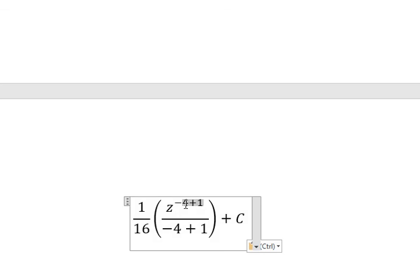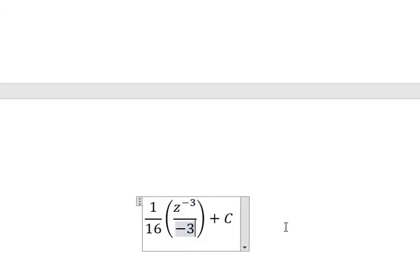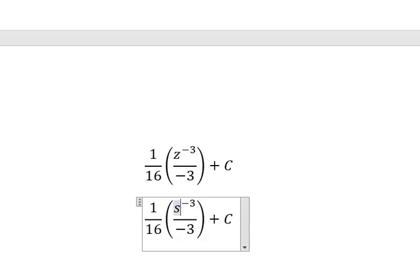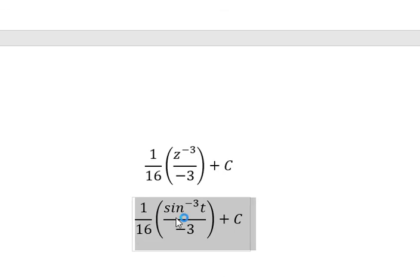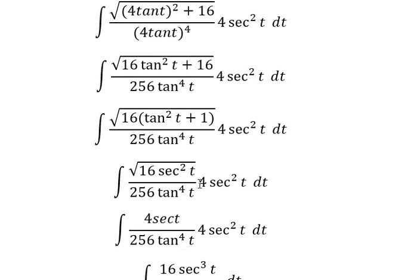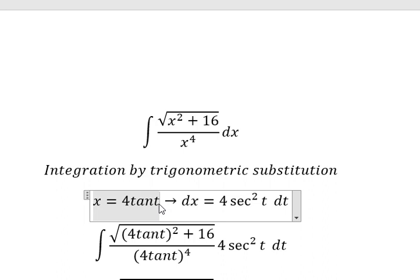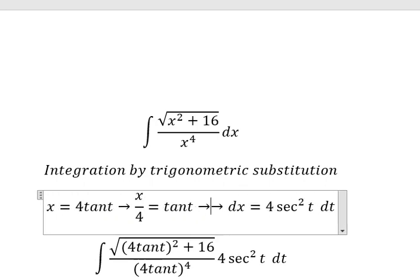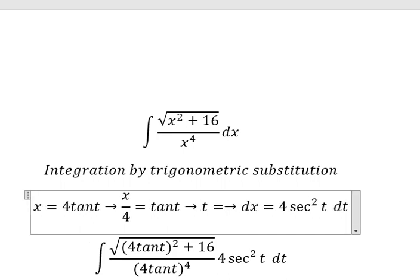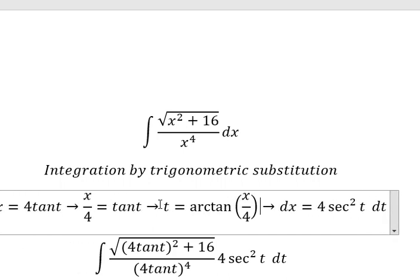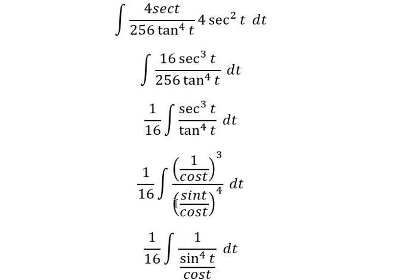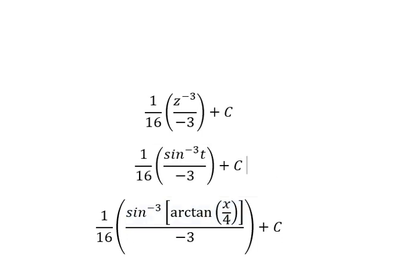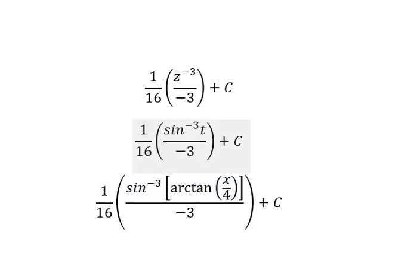This gives us a power of negative 3. For z, that is sin(t). For t, we need to divide both sides by 4 to find the value of t, which is arctan(x over 4). Substituting back in gives us the final answer. This is the end. Thank you for watching.